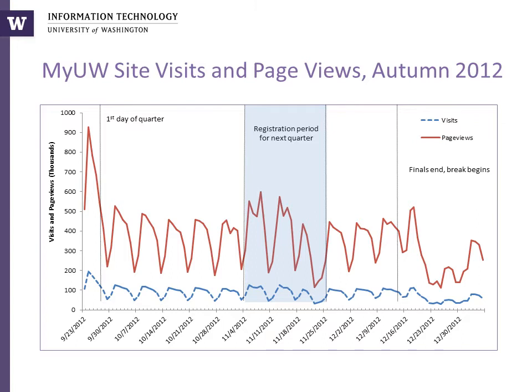The first day of the quarter shows a sharp spike in both visitors and page views. On a weekly basis, visits and page views tend to be highest on Mondays and significantly lower on weekend days. Mid-quarter, visits and page views tend to increase noticeably during the registration period for the next quarter. Immediately after the quarter ends, there is an increase in visits and page views, likely because students are checking their grades.